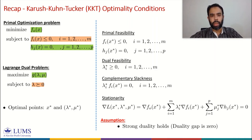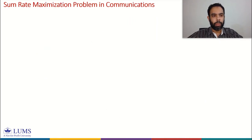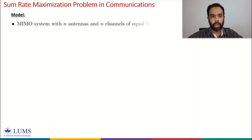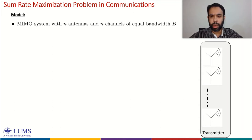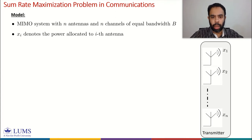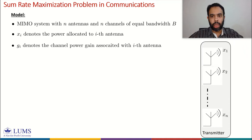Now we look at the sum rate maximization problem in communication systems. We model a MIMO system with n antennas and n channels of equal bandwidth B. We have these n antennas — 1, 2, ..., n — at the transmitter, and the bandwidth of each channel is the same, denoted by B.